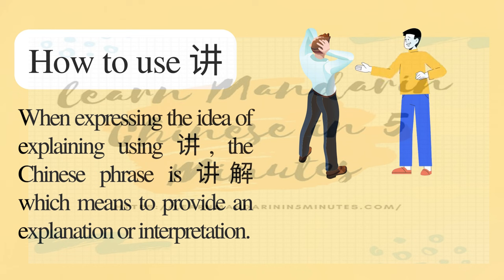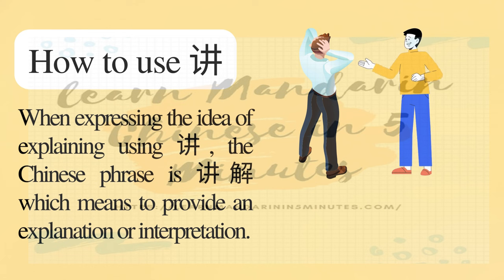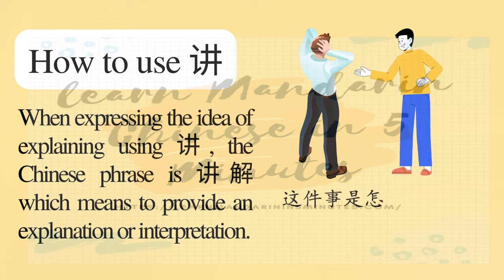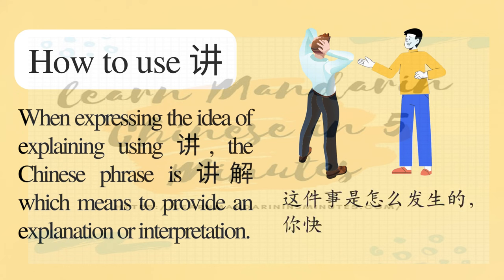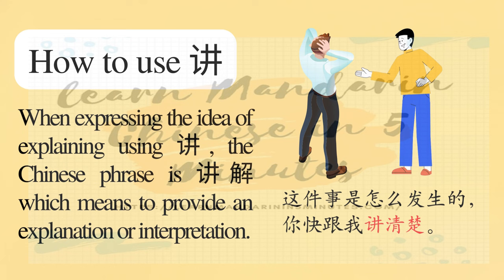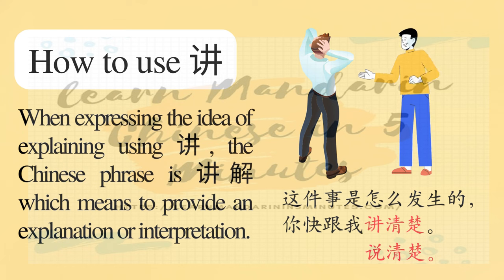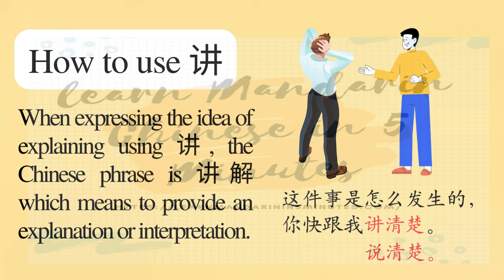When expressing the idea of explaining using 讲, the Chinese phrase is 讲解, which means to provide an explanation or interpretation. 解 means to solve or untie. For example: 这件事是怎么发生的，你快跟我讲清楚. (How did this happen? Explain it to me quickly.) Here, 讲清楚 can be changed to 说清楚: 这件事是怎么发生的，你快跟我说清楚.